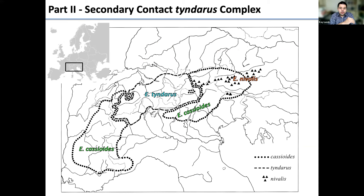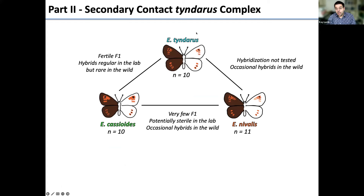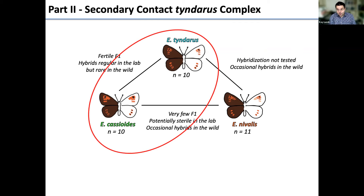Back to Aricia — our main system. We have three closely related species: Tindarus, sandwiched between Cassioidus and Nivalis. They exist at one spot in the eastern Alps in Austria where all three co-occur. The three species differ in karyotypes — Nivalis has one more chromosome than the others. From classic crossing experiments in the 1960s, we know Tindarus × Cassioidus crosses produce fertile offspring, while other crosses produce fewer and likely sterile offspring. In the field, intermediate phenotypes are often reported.